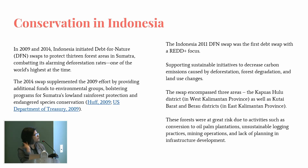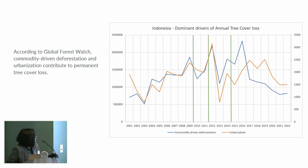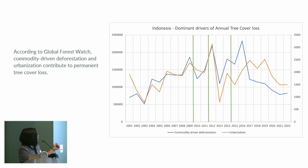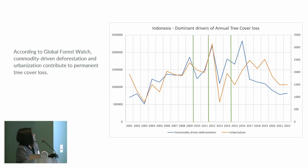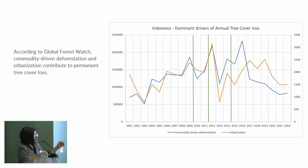Going through the conservation effects in Indonesia: the 2011 swap was the first one with a reforestation focus. Commodity-driven deforestation and urbanization contribute to permanent tree cover loss, and commodity-driven deforestation is largely correlated with illegal logging practices. The green lines indicate the years the swaps were taken. Although we can see some downward trends in tree cover loss, it still reached its peak well after the third swap was enacted.